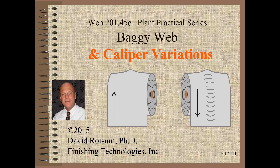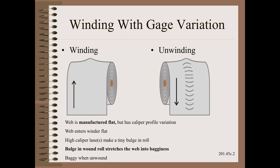I do this with the admonishment not to jump to conclusions — a very big risk in the best of times. The most common cause of bagginess is variations across the width of basis weight, caliper, gauge, or whatever you call thickness. The web is usually made flat; however, the relatively higher thick lanes build up and stack up in the wound roll into higher pressure, larger circumference ridges.